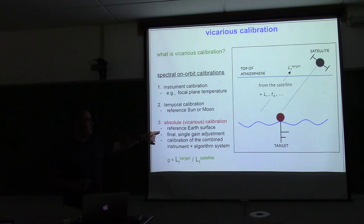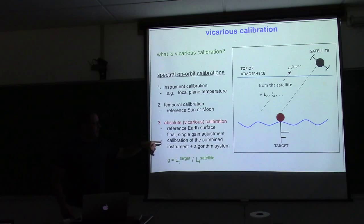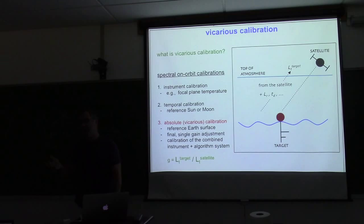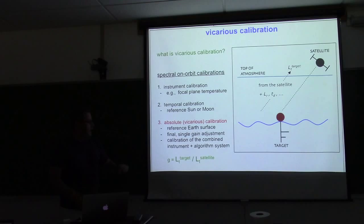We do temporal calibration using the sun and moon as references. The third calibration type, which we focus on today, is vicarious calibration — one last absolute calibration of the instrument referencing Earth's surface as ground truth, using a Moby-like buoy. We calculate a final single gain adjustment — a single correction factor for every wavelength on the satellite. Note that in this process, the atmospheric correction is included, so the final absolute adjustment corrects both for the instrument and for the atmospheric correction algorithm system itself. The gain is simply the ratio of the ground truth target to what the satellite actually sees, calculated at the top of the atmosphere.